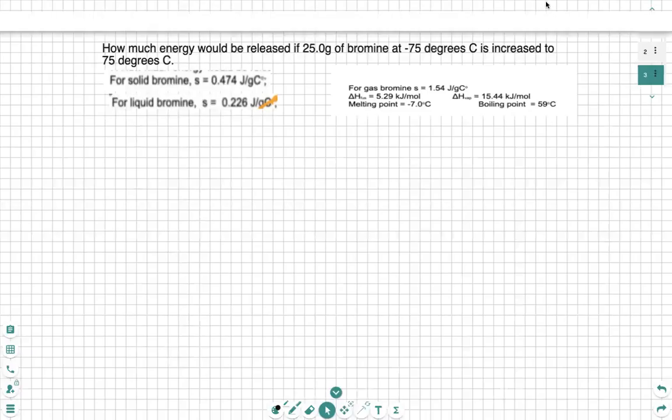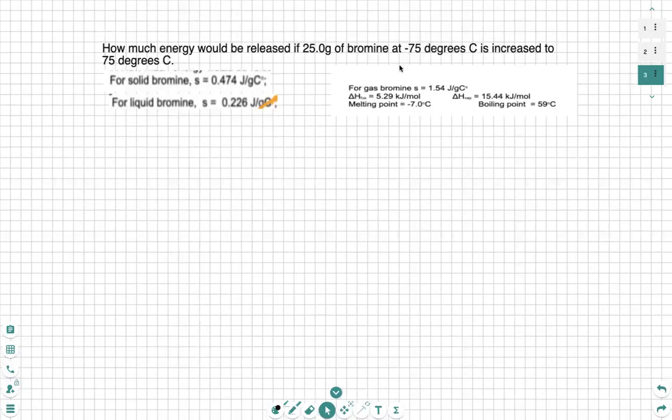Hello. In this video, we're going to go over how to convert bromine from negative 75 degrees Celsius solid to positive 75 degrees Celsius gas. The first thing we suggest doing is mapping this out. That way we can easily find the total energy required for each section.